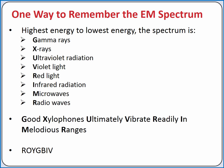To remember the order of colors in the visible spectrum, you can use ROYGBIV: red, orange, yellow, green, blue, indigo, violet.